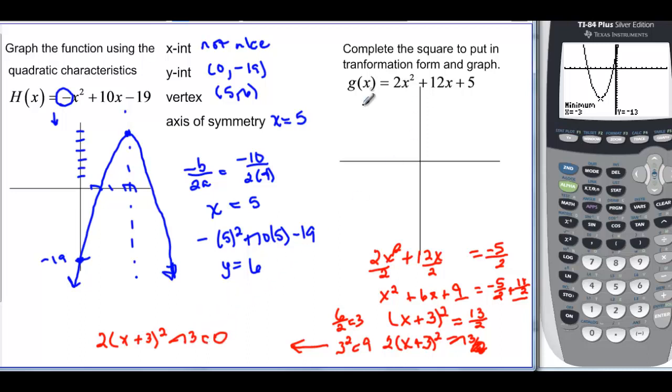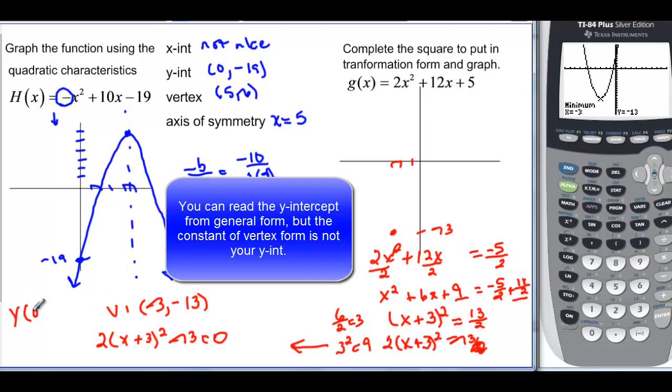So that tells me that my vertex is going to be opposite of this, -3 and then -13. So (-3, -13) is my vertex. It opens up. It's got a 2 in front of it. So that means it's going to be skinnier than a normal one like this one. It would be skinnier than that one would have been.